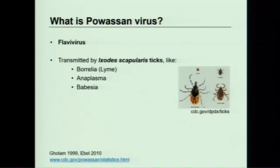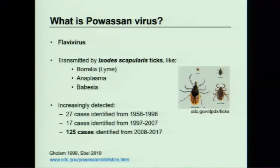First, a little about Powassan virus — it's my favorite virus. It's a flavivirus, like West Nile, but unlike West Nile which is transmitted by mosquitoes, Powassan virus is transmitted by ticks — specifically Ixodes scapularis, the same vector that transmits Borrelia, the causative agent of Lyme disease, as well as Anaplasma and Babesia. Powassan virus has been increasingly detected and recognized as an important pathogen, with a drastic increase in cases over recent decades. This was a perfect scenario for metagenomic sequencing: a disease hard to think of, hard to order the right test for, and with a long result turnaround if you do order it.